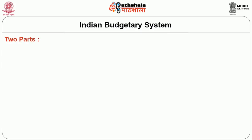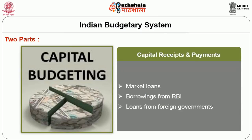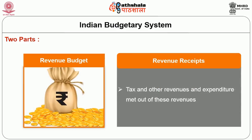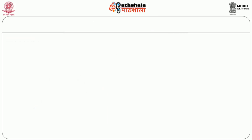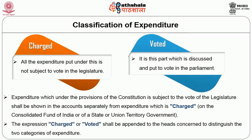Two parts of the Budget: The budget consists of two parts — namely Capital Budget, which consists of capital receipts and payments such as market loans, borrowings from RBI and loans from foreign governments, etc.; and Revenue Budget, which consists of revenue receipts such as tax and other revenues and expenditure met out of these revenues. Two Heads of Expenditure: All the expenditure put under the Consolidated Fund is not subject to vote in the legislature. This includes all the expenses to meet the constitutional obligations such as salaries of constitutional authorities and meeting the expenses of constitutional institutions, as well as all the money required to meet all the expenditure proposed to be made from the Consolidated Fund. It is this part which is discussed and put to vote in Parliament.